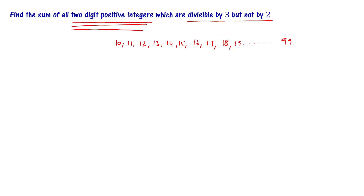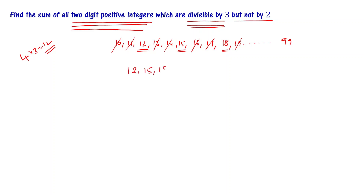Now let's find the numbers that are divisible by 3. 10 is not divisible by 3. 11 is also not divisible by 3. 12 is divisible — 4 times 3 equals 12. 13 and 14 are not divisible. 15 is divisible. 16 and 17 are not divisible. 18 is divisible. Like that we can check. The numbers divisible by 3 are: 12, 15, 18, 21, and so on. Note that 19 is not divisible by 3, and 99 is divisible by 3.